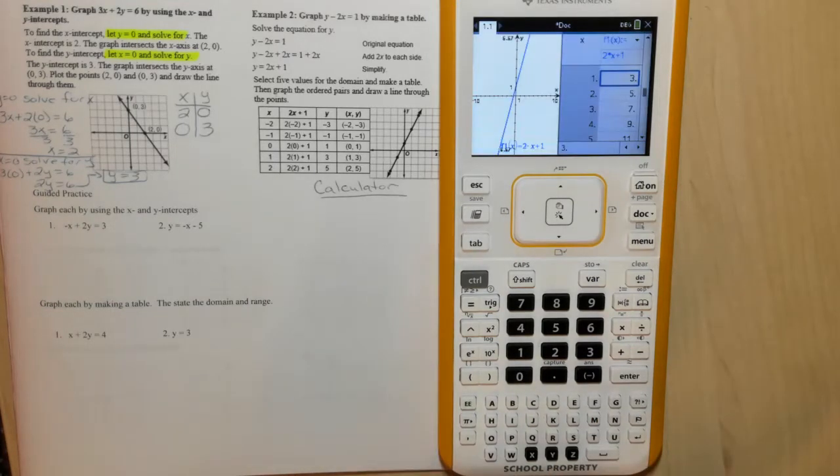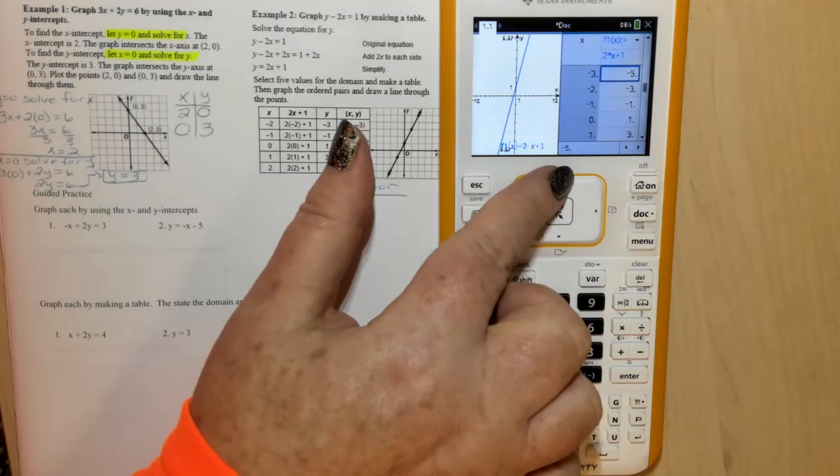There we go. There's our table. It's got our values. We can scroll.